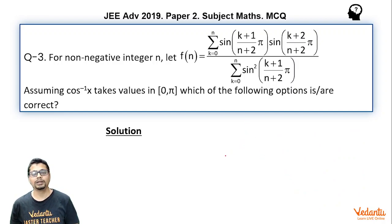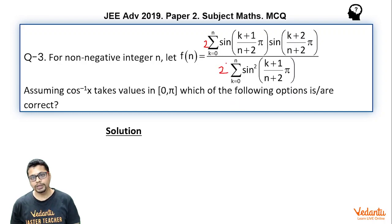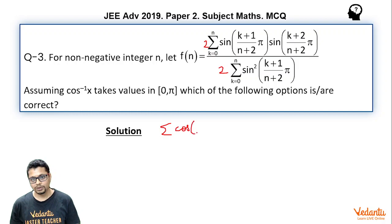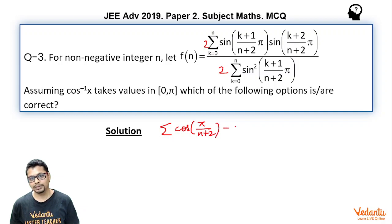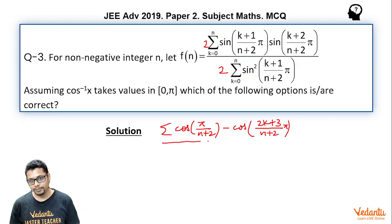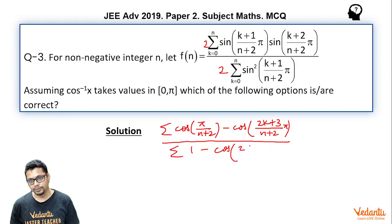To be able to use these formulae, I should multiply numerator and denominator by 2. In the numerator, 2·sine(a)·sine(b) essentially becomes cos(a−b) − cos(a+b). Since cos(−θ) = cos(θ), what you get is cos(π/(n+2)) − cos((2k+3)/(n+2) · π), divided by sigma of 2·sine²(θ), which I can write as 1 − cos(2θ).